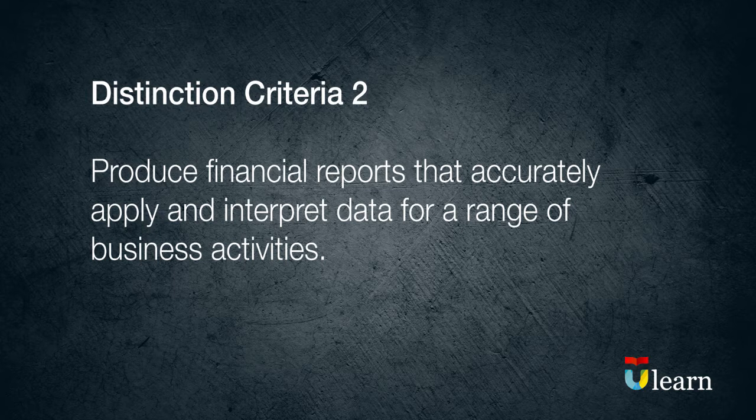To meet the requirements of Distinction Criteria 2, you need to produce financial reports that accurately apply and interpret data for a range of business activities. In this section, you have to produce financial reports. This may be in the form of a profit and loss, balance sheet and cash flow statement, or CVP analysis report, or any result from the management accounting system, and your tutor will show you what these reports look like. You will then use these reports to interpret data from at least three different business activities.